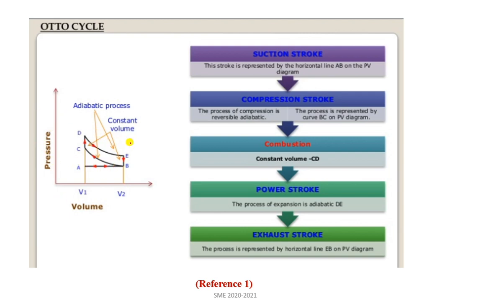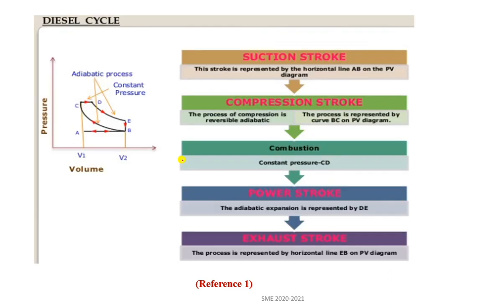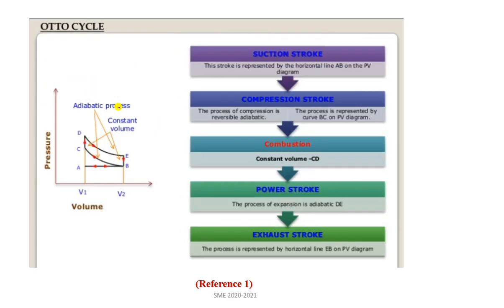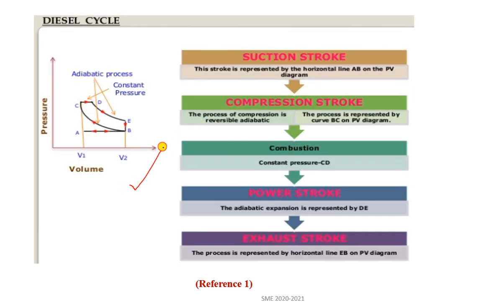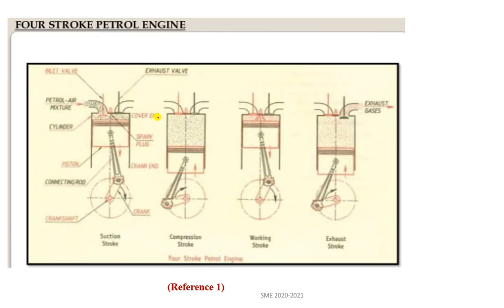On a pressure-volume diagram, we can see the four strokes of petrol and diesel engines. The Otto cycle is a constant volume cycle. The Diesel cycle has four cyclic processes — two constant pressure processes and two adiabatic processes. The P-V diagram explains how pressure and volume increase and decrease and how they are interdependent.